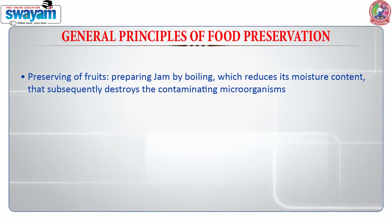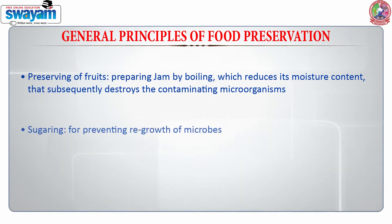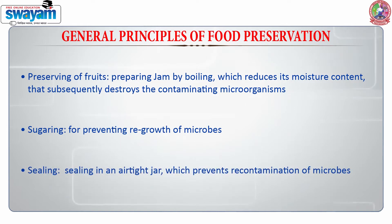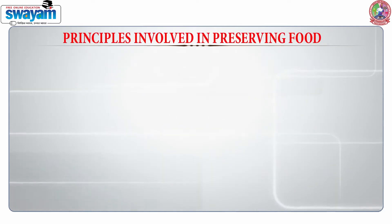Food technologists have developed simple and effective techniques for preserving food, such as preserving fruits by sugaring and sealing. Preparing jam by boiling reduces its moisture content, which subsequently destroys contaminating microorganisms. Sugaring prevents the regrowth of microorganisms, and sealing in an airtight jar prevents recontamination.